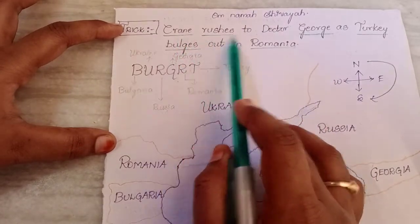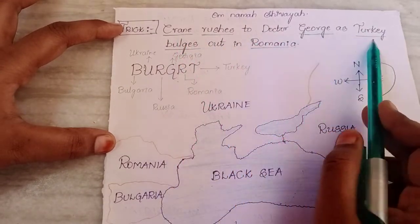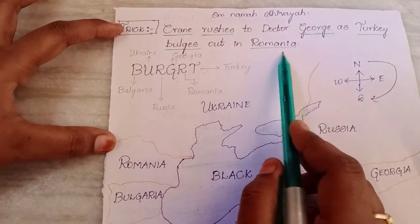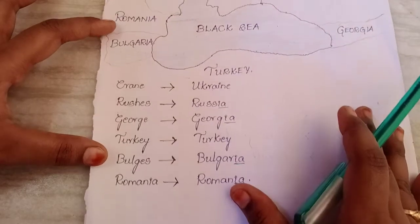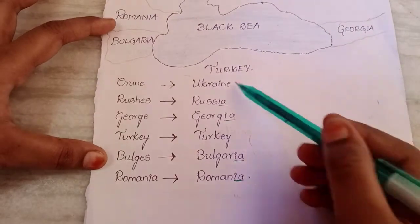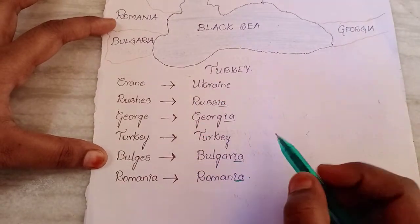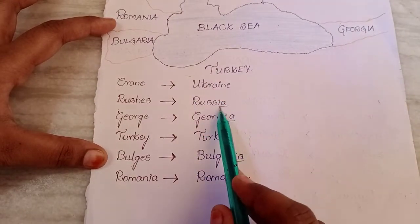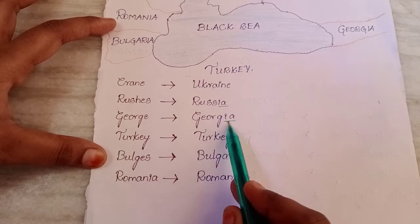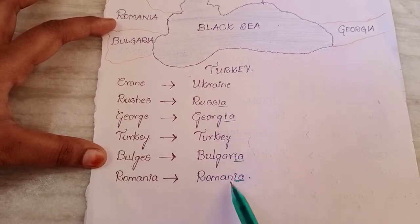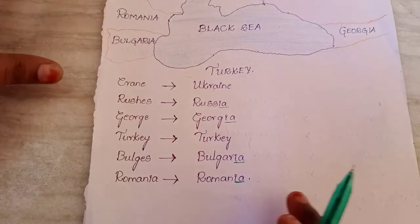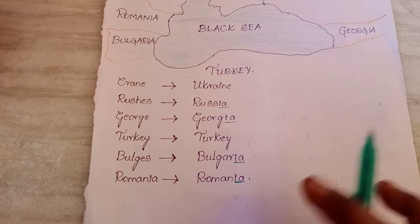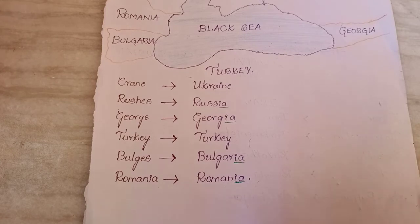Now, looking at the countries surrounding the Black Sea, one thing is common: Russia ends in 'ia', Georgia ends in 'ia', Bulgaria ends in 'ia', Romania ends in 'ia'. Most of the Black Sea countries end with 'ia' or 'ea'.